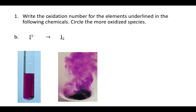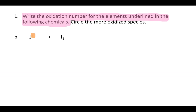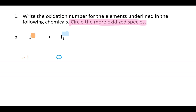For Part B, the same question is asked with two different molecules. On the left, iodine is not combined with any other element, so its oxidation number will be whatever is written in the top right — in this case, negative 1. On the right side, you have two iodine atoms, but there isn't any other element, so its oxidation number is zero. Circle the more oxidized species — that's the more positive one — which is zero.